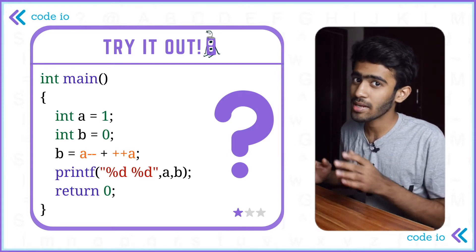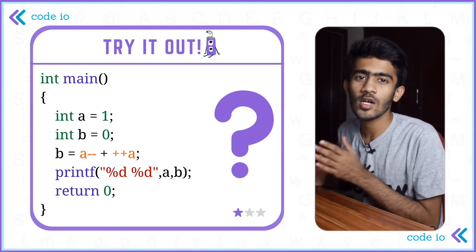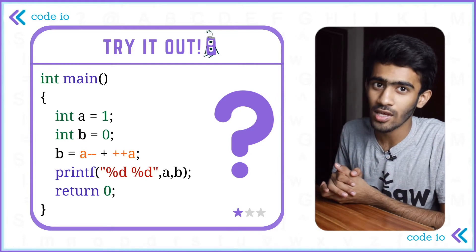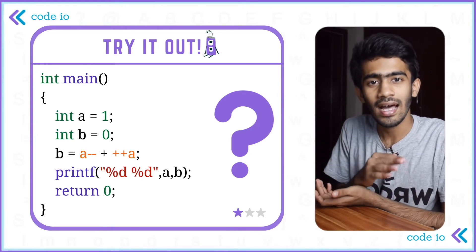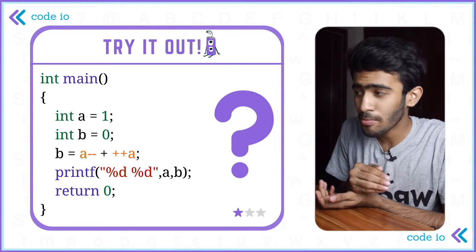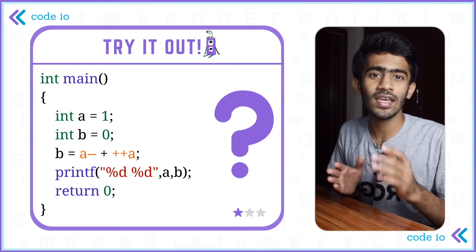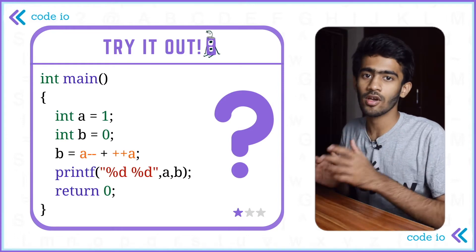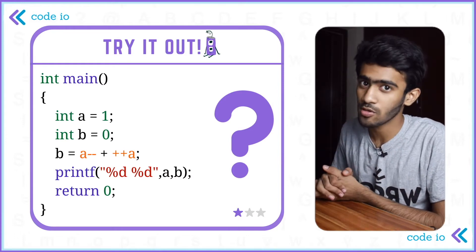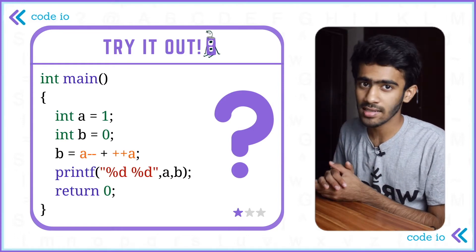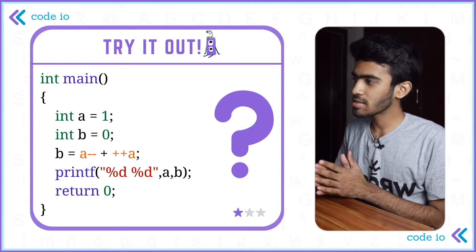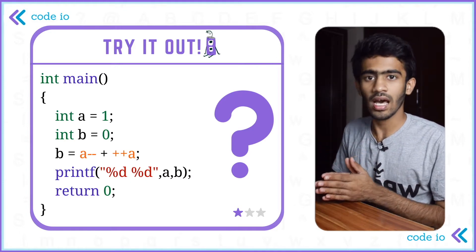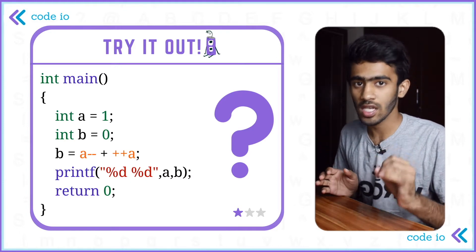b is equal to a plus a. And if we take the time to get the value of a, we will substitute this. First, a minus minus. So a minus minus will be 0.